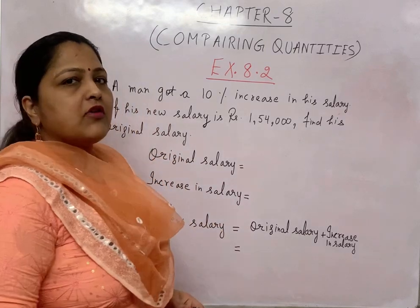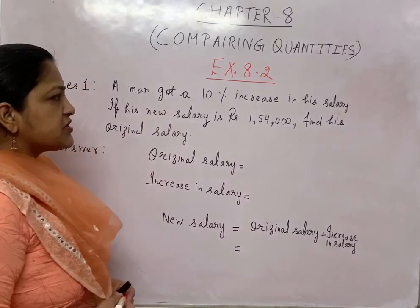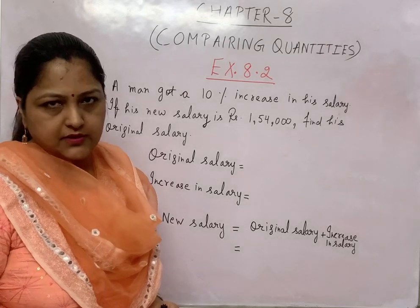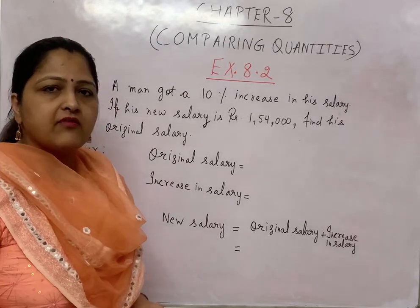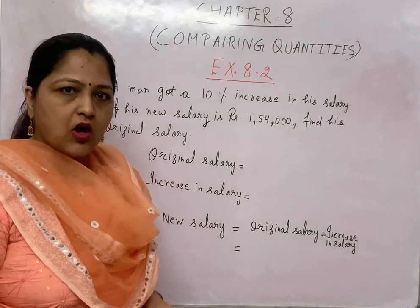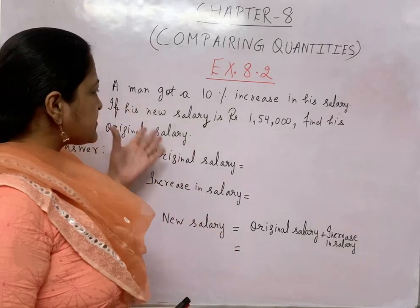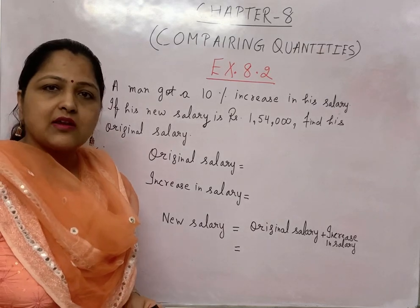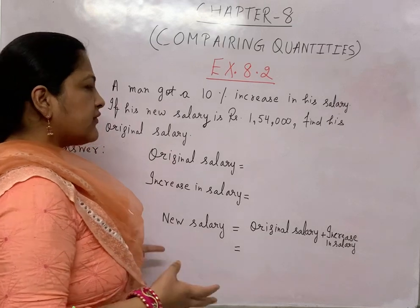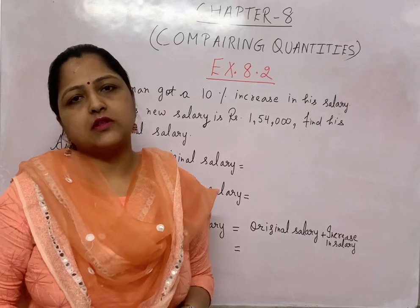So let us see one more situation related with increase. In the last situation we discussed, the original value was given. But in this question, the original value is not given. I have already told you, always solve the questions with the base value. For price-related situations, the base value is the original, old, or initial value. So if it is not given, either we assume it as X or we can solve with the help of 100.